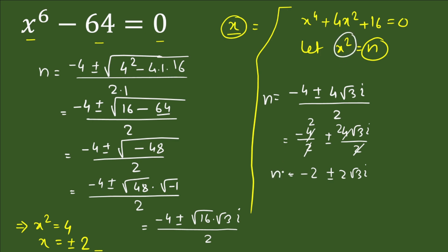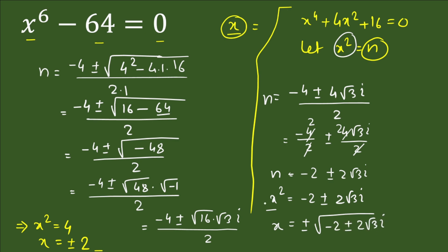Replacing n with x², we have x² equals minus 2 ± 2√3·i. Taking the square root of both sides, x equals ± √(minus 2 ± 2√3·i). This gives 4 more values of x, and combined with the 2 real values from before, we have a total of 6 values of x. These are all the solutions. I hope you enjoyed the video.